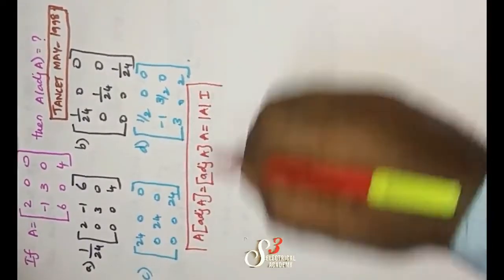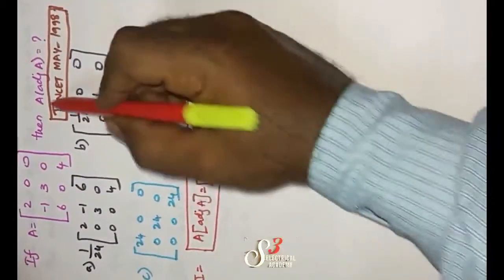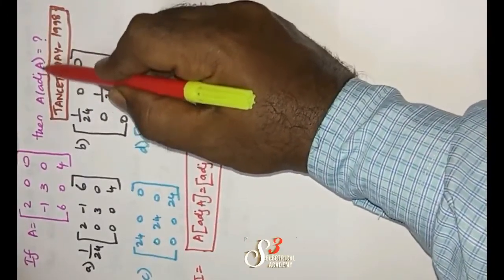This is for method number 1. Suppose if you want to find out a matrix into adjoint of A, no need to find out the entire thing.